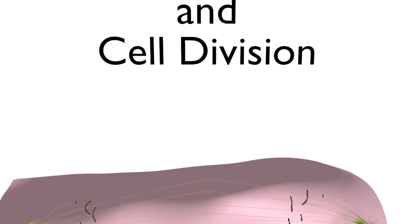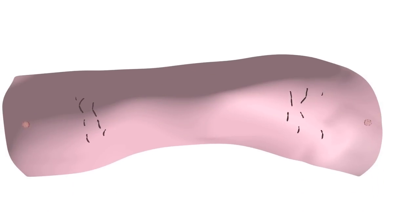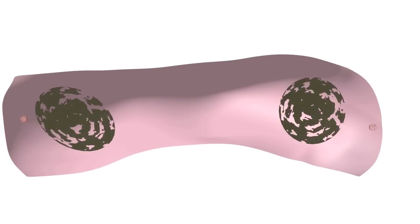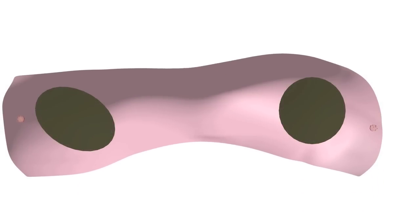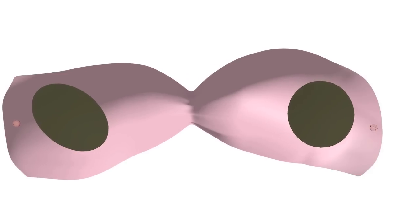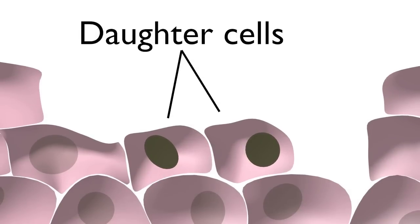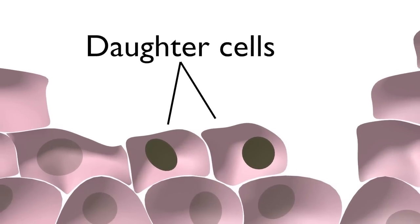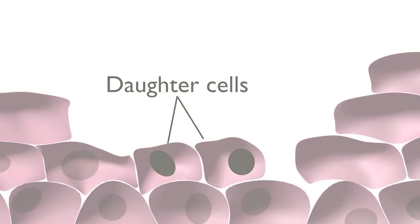Nuclear envelopes assemble around the two chromosome clusters, and the cell divides around its midsection in a process called cytokinesis. Cytokinesis results in the formation of two daughter cells. If all went well, the two daughter cells will have the identical genetic makeup as that of the parent cell.